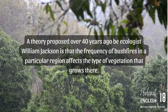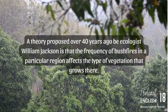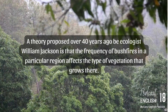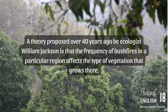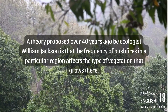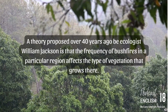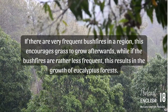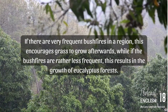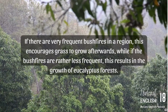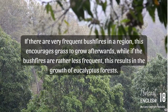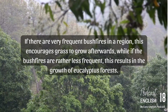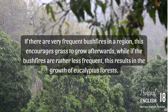A theory proposed over 40 years ago by ecologist William Jackson is that the frequency of bushfires in a particular region affects the type of vegetation that grows there. If there are very frequent bushfires in a region, this encourages grass to grow afterwards, while if the bushfires are rather less frequent, this results in the growth of eucalyptus forests.